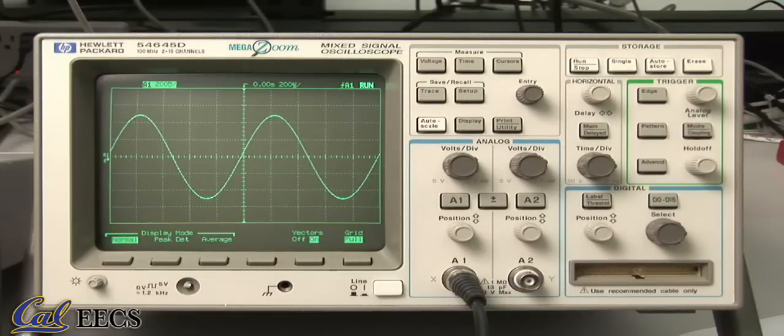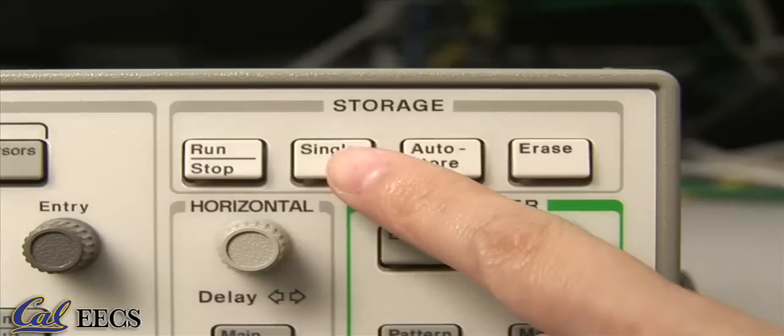One very useful feature of your scope is its ability to wait for a signal to cross a specific level and then take a snapshot. This is accomplished using single shot mode.